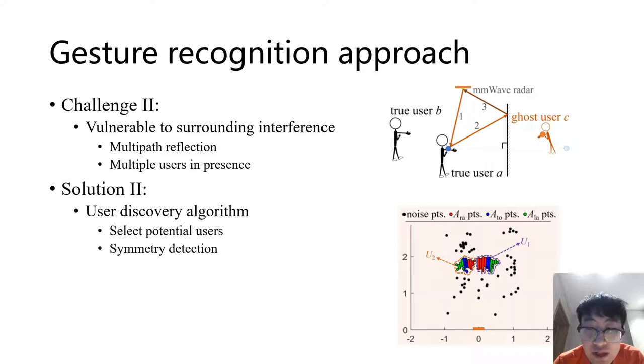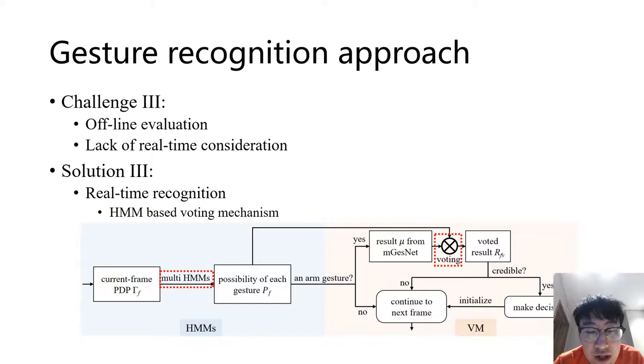Thirdly, most existing solutions are operated in an offline way, assuming the gesture symbols are segmented and prepared in advance. However, in practice, users perform gestures continuously, and thus it is a non-trivial challenge to distill and segment them out accurately and timely. In this work, we use a sliding window to collect the gesture features for a trained Hidden Markov Model, so as to ensure accurate gesture segmentation.